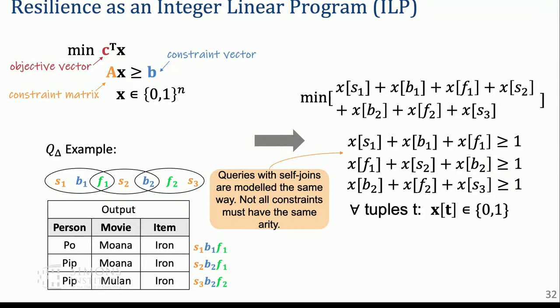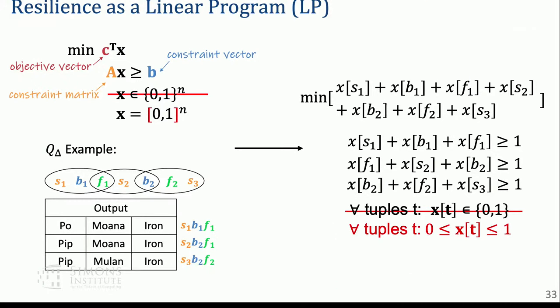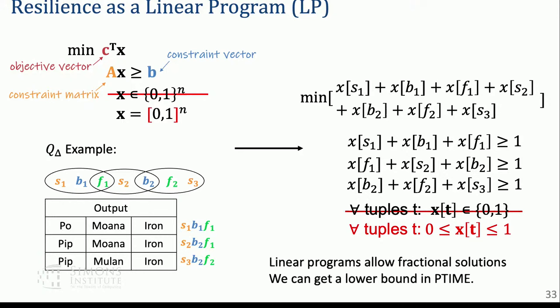If you set the values of f1 and b2 to 1, you get the same resilience as before. You can also take away the integrality constraint to get a relaxed linear program. You get a fractional solution, which is a natural lower bound since you're removing constraints, and you can obtain a lower bound for resilience.